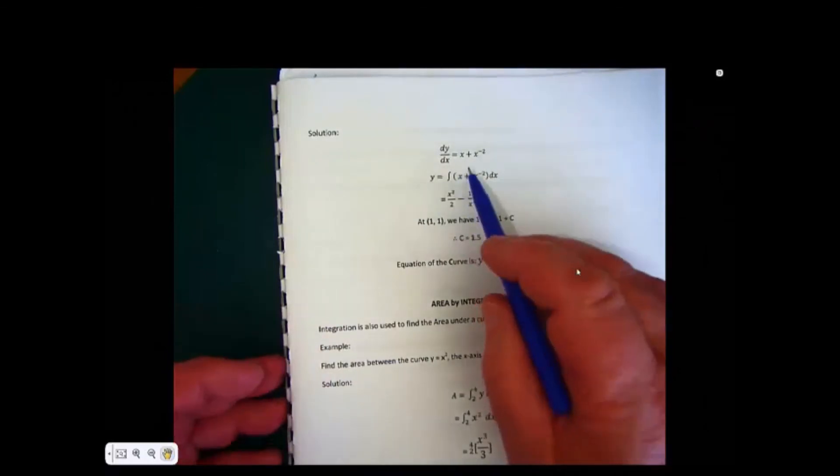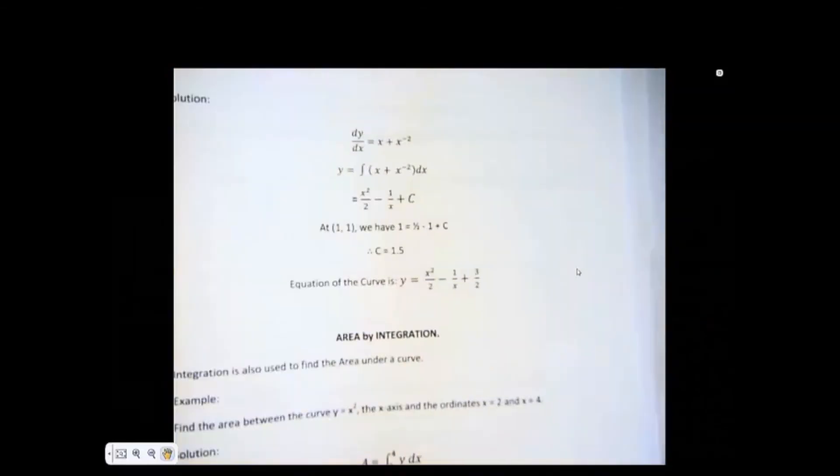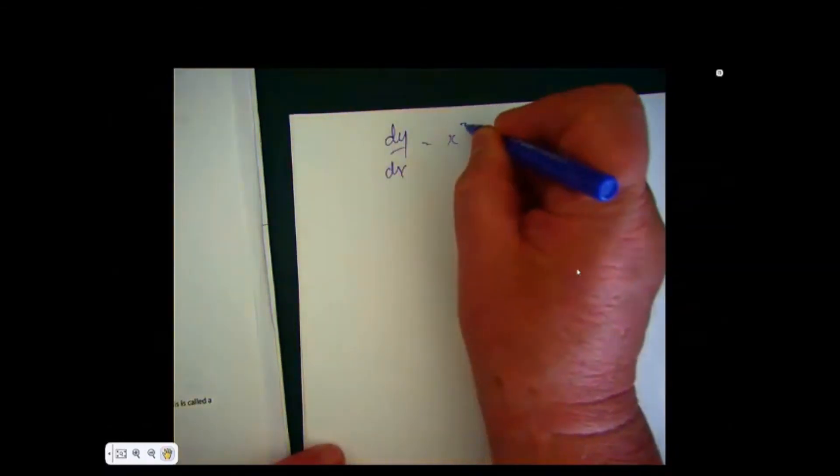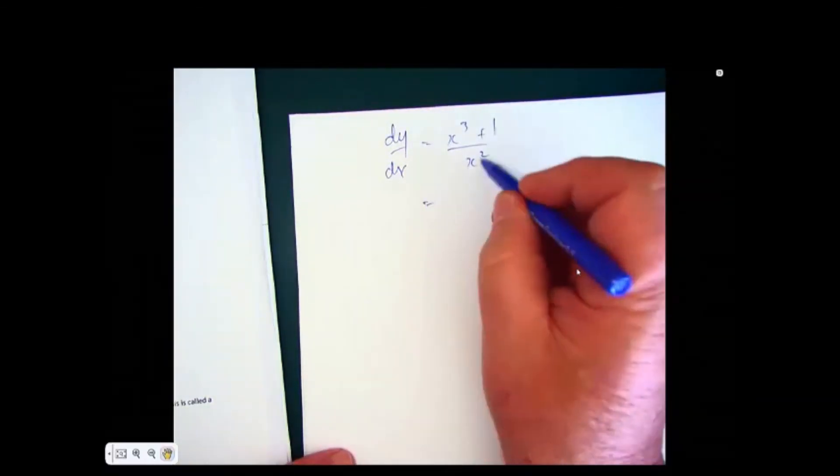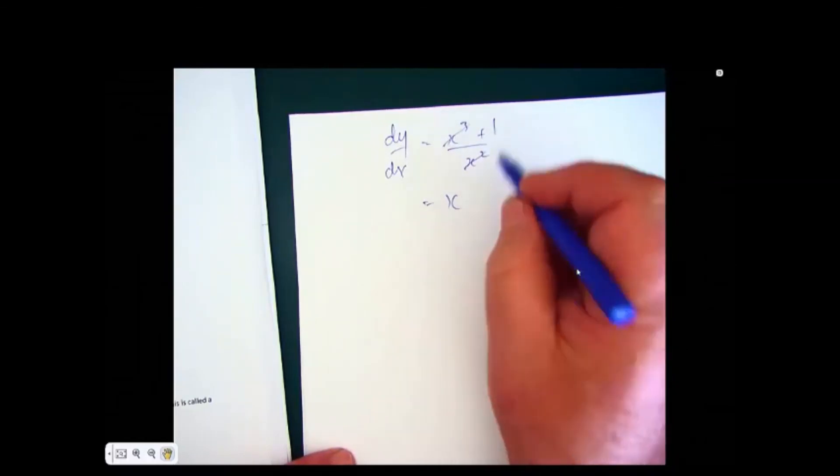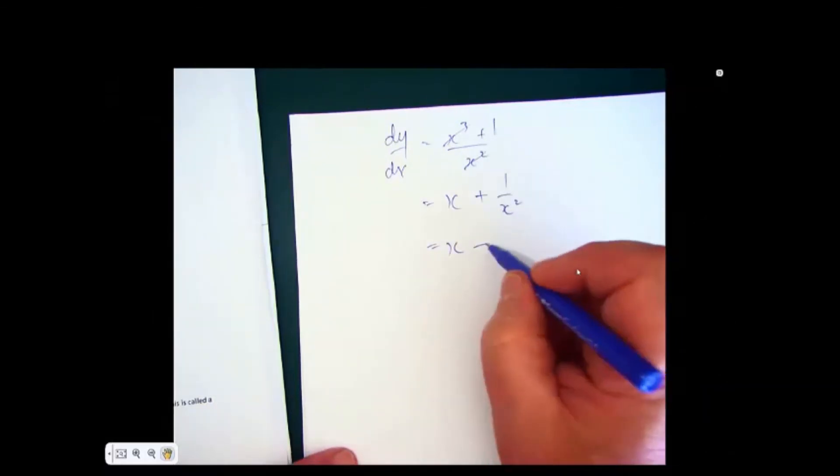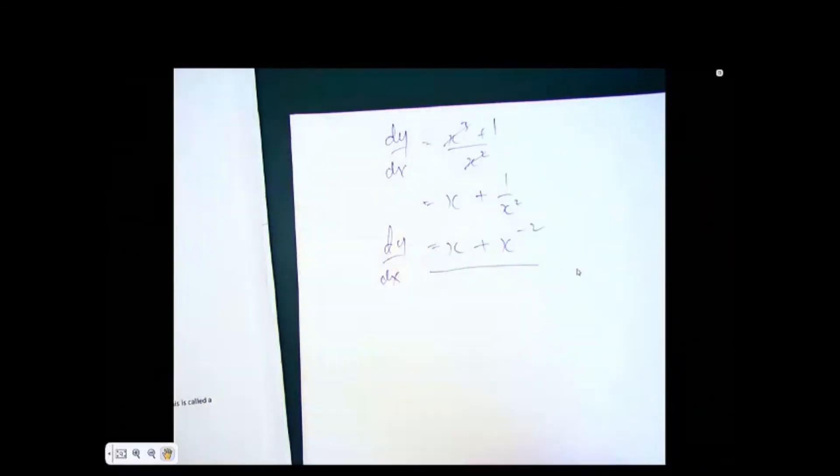Now, dy/dx, when we actually differentiate this, we have x cubed plus 1 over x squared. So I'll show you how this simplifies first of all. We're given dy/dx, which is x cubed plus 1 over x squared. We rearrange this, we can divide this out. This is the same as that, into that goes x, and that into that simply is that. Or, as we've got in the book, x to the minus 2. So that's what we're given.